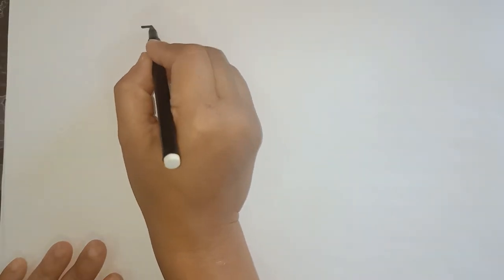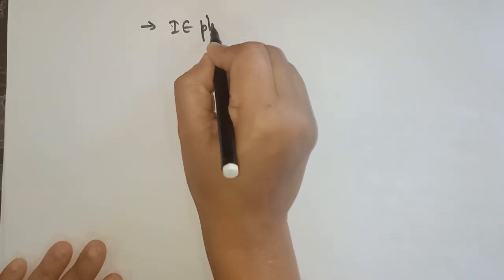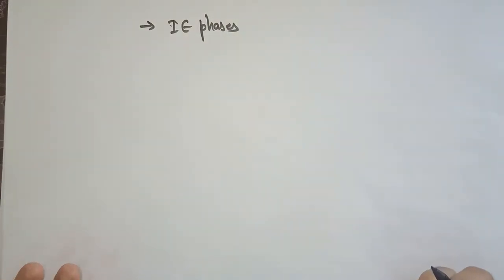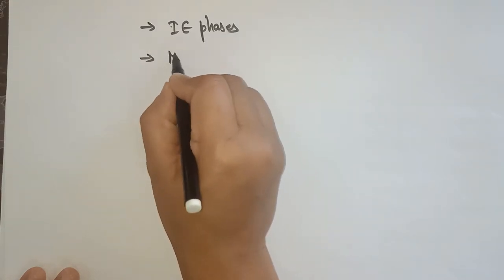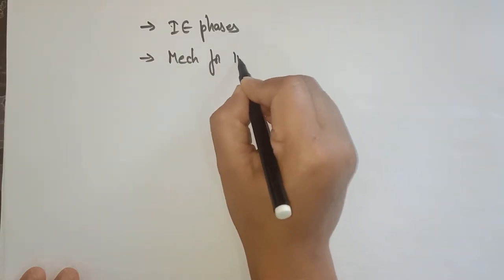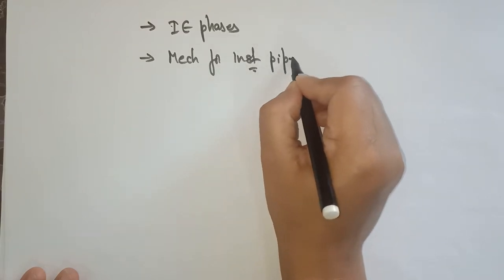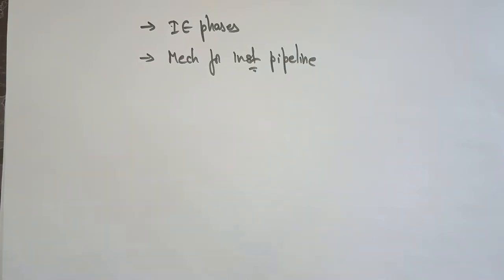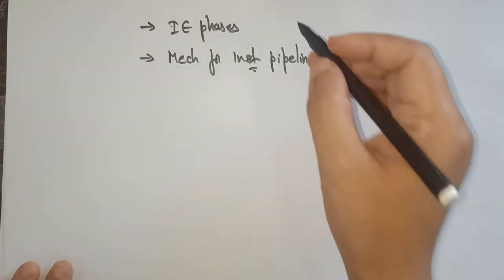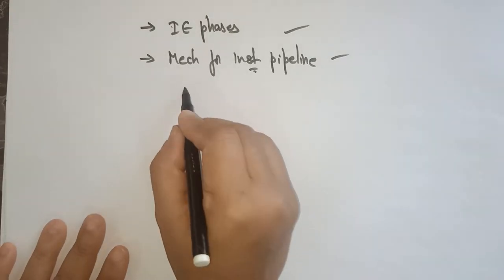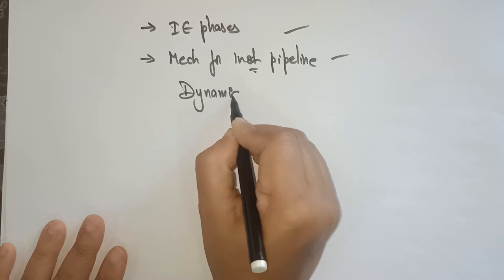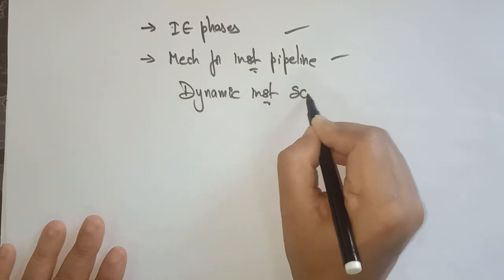Welcome back students. Let's continue with our techniques for improving the pipeline process. So far we discussed instruction execution phases and how they are useful for improving the pipeline process. We also discussed mechanisms for instruction pipeline. Now let's discuss the dynamic instruction scheduling technique.